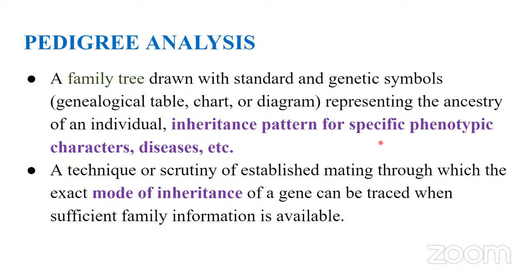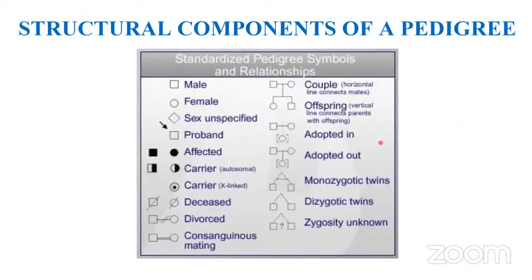Genetic counselors use pedigree analysis. If they are not a patient or baby expert, they can give advice based on it. In a pedigree chart, there are standardized symbols. Male is represented by a square, female by a circle, and a rhomboid shape represents sex unspecified — usually used when a child is in the womb and the sex is unknown. The proband, the person who starts the investigation, is identified with an arrow.